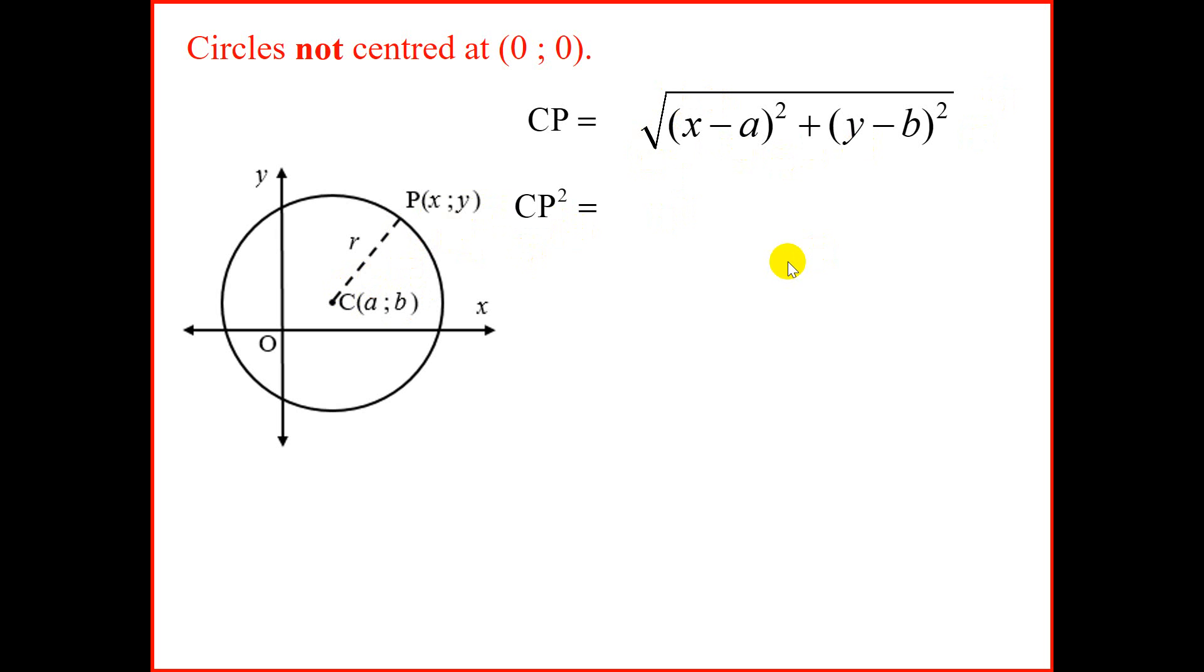We're going to now square both sides. So if we square both sides, we're going to get CP². And the square and the square root will cancel off, and we're left with (x - a)² + (y - b)². Now remember, CP is our radius. So we end up with the equation of a circle whose center is not at (0, 0). But remember, this equation will also work for an equation of a circle, even if we move the center to (0, 0), because a and b would become 0.